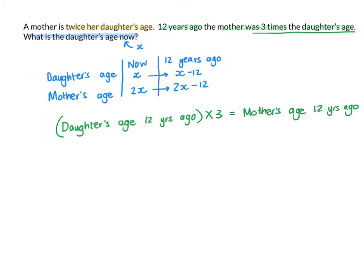So the daughter's age twelve years ago is x minus twelve, and I'm going to multiply that by three. It's equal to the mother's age twelve years ago, which is two x minus twelve. So I'm going to distribute three into both of these.